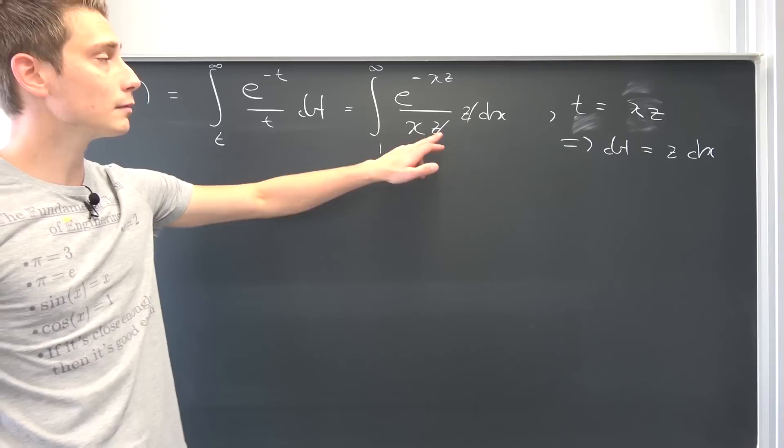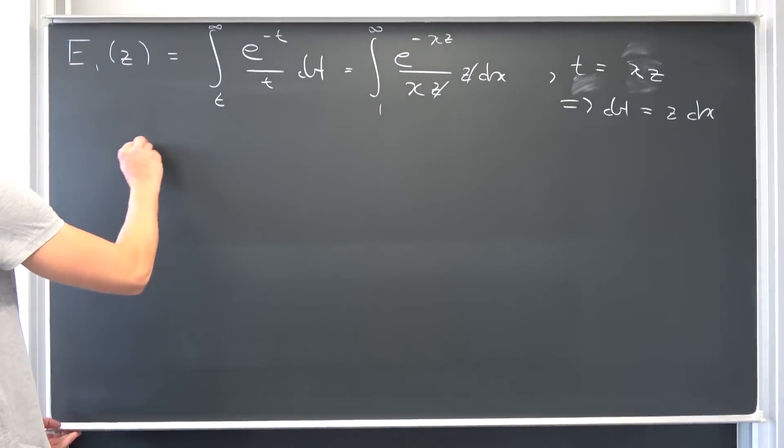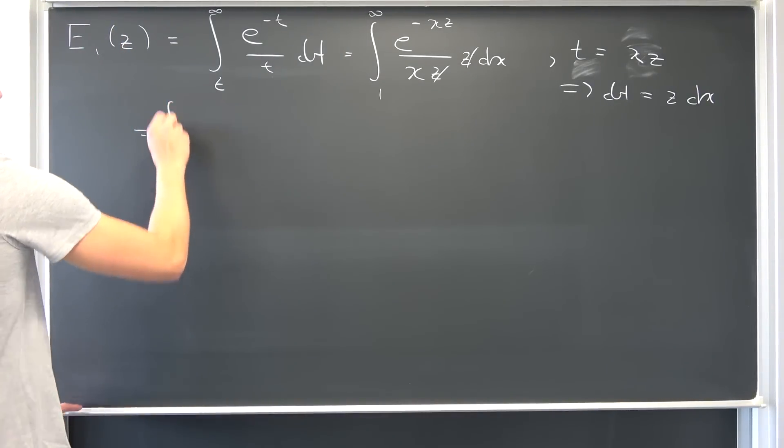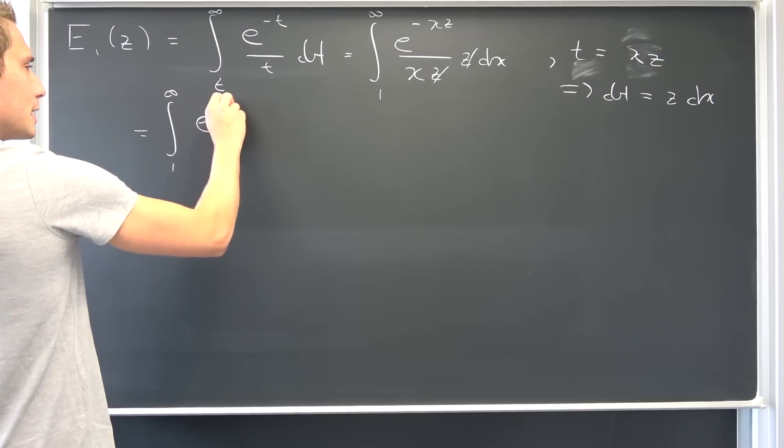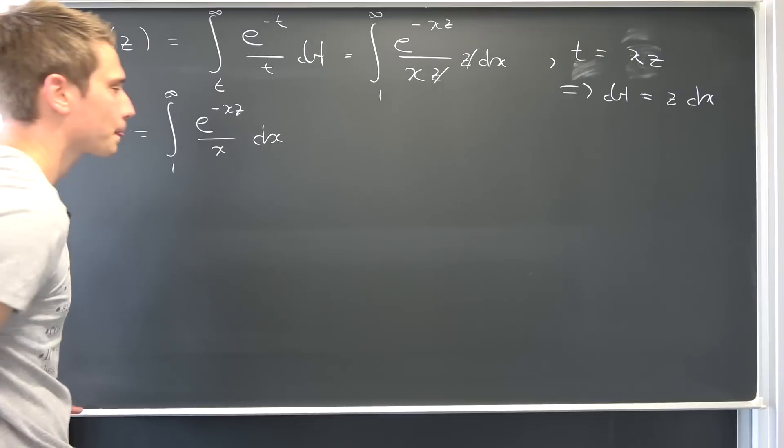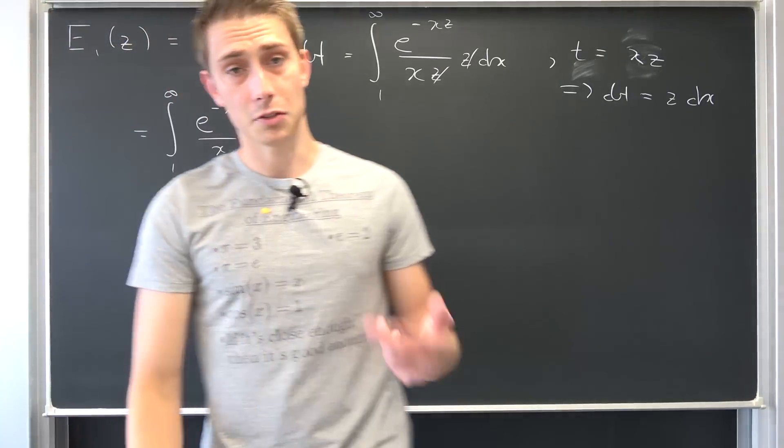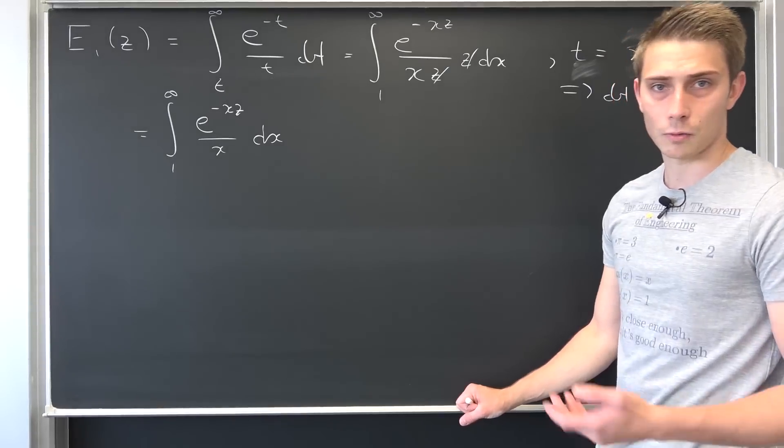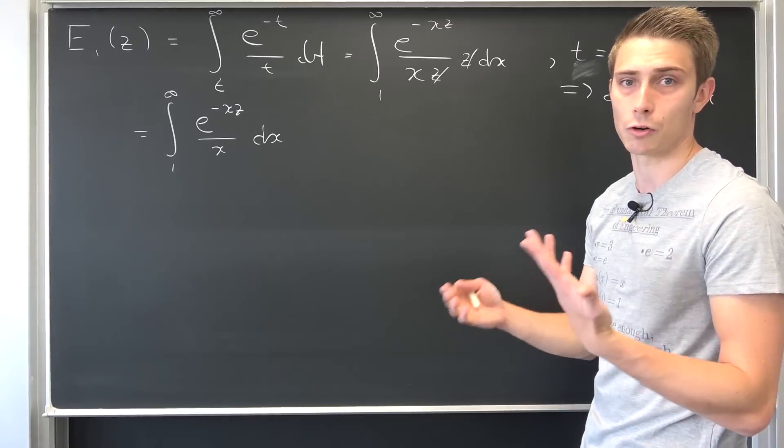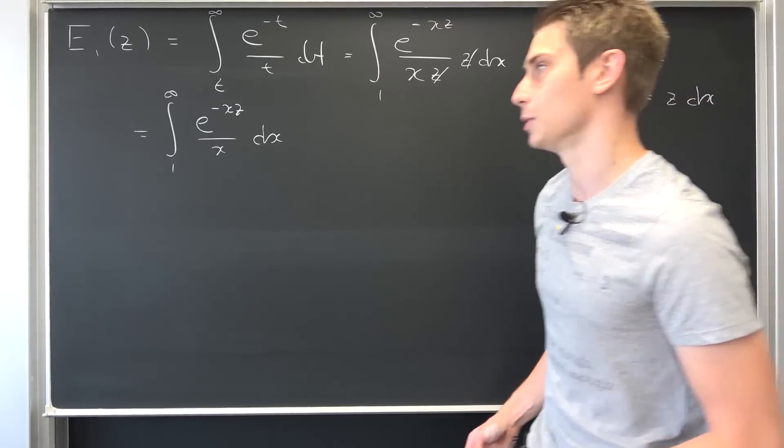That's good. Now, I'm going to write it out yet again, because we are going to do our transformation now in a second. Integral 1 to infinity, e to the negative x times z, over x, dx. Now, I would like to introduce a new parameter. We are going to do the transformation z goes to i times z. We are going to introduce imaginary arguments now.